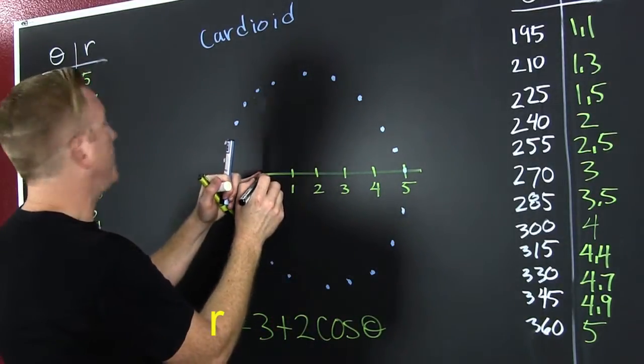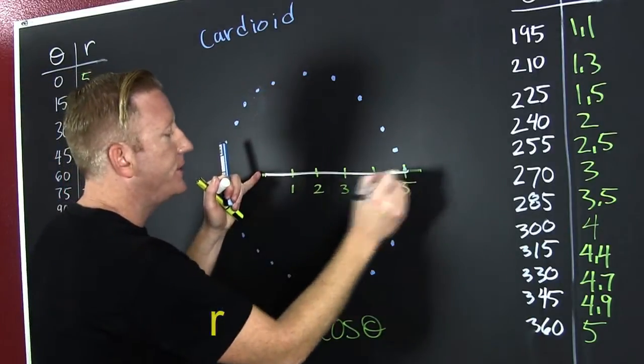When theta is equal to zero, we are out. Five, fifteen, and continuing to plot each point.